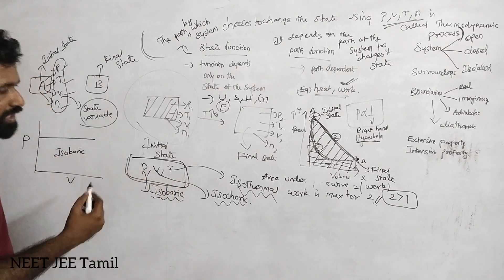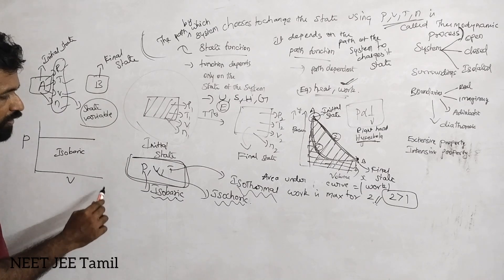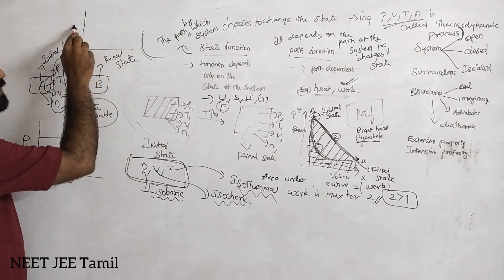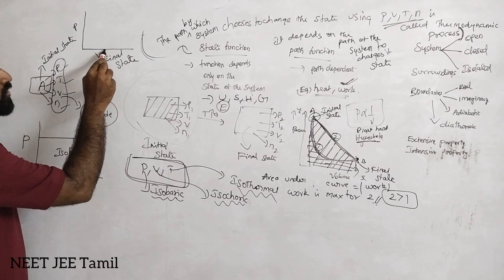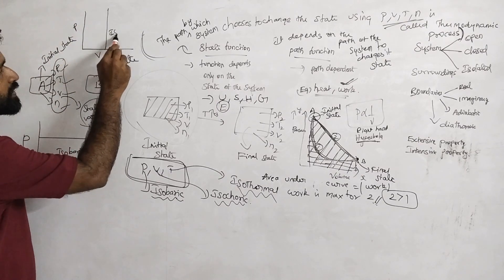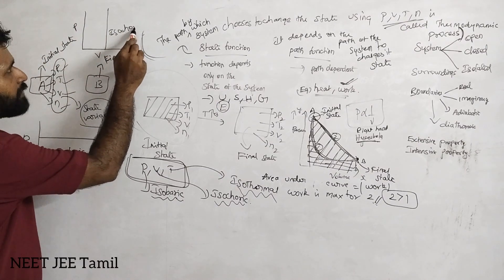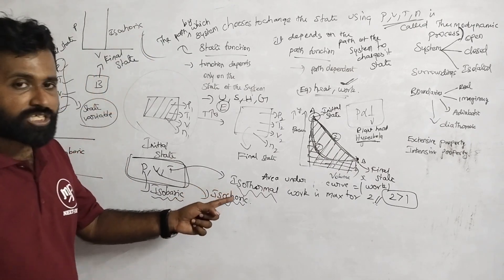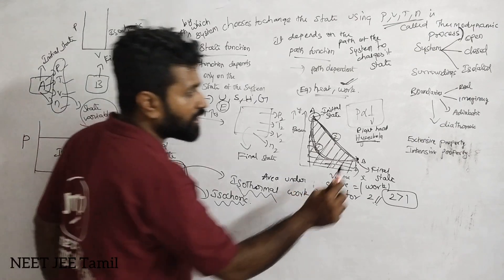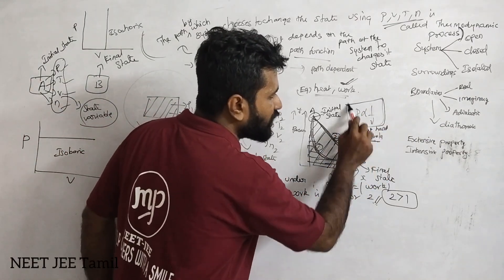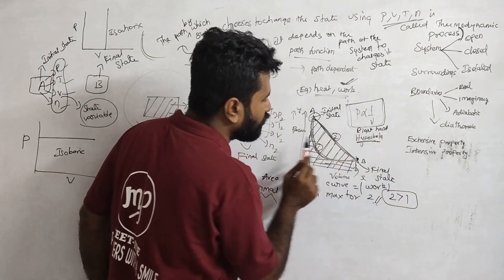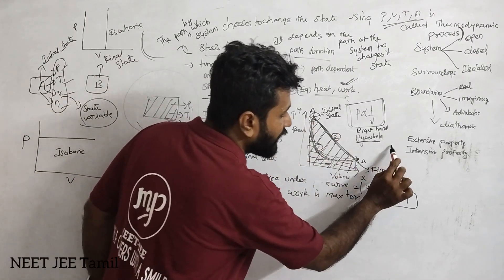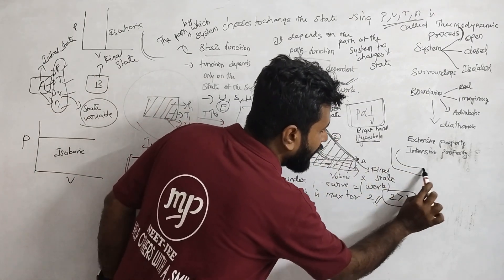Next, isochoric process. Volume is constant — we can graph that now. Simply, pressure versus volume. Isochoric process graph here. Now isothermal: temperature is constant. For pressure and volume, how do you get a relation? P is inversely proportional to V. On the graph, it's a right-hand side hyperbola.